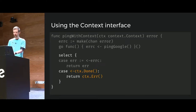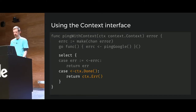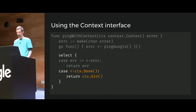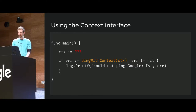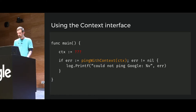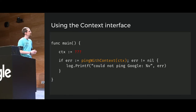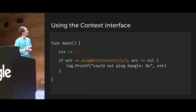Here we're wrapping our ping Google function with a ping-Google-with-context function. We give it a context that can then handle timeouts and similar things. How you create and set the context value is key to how it handles that.